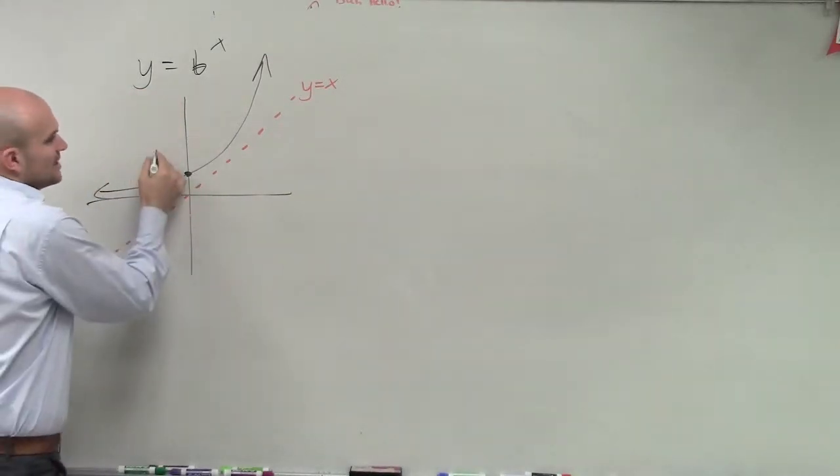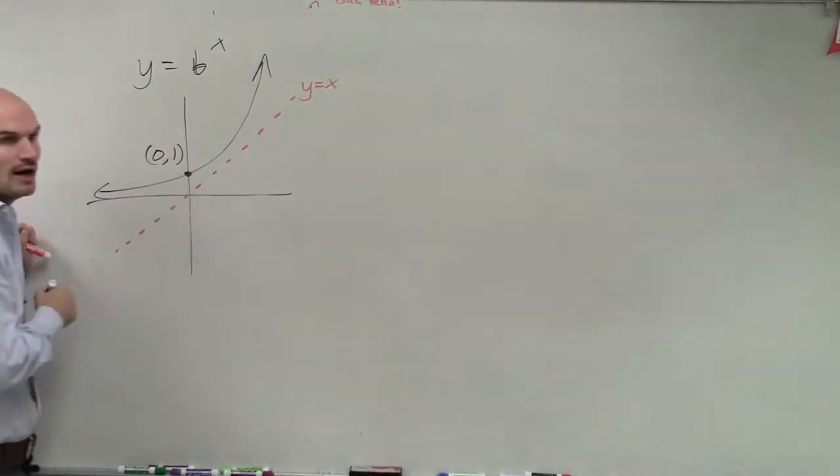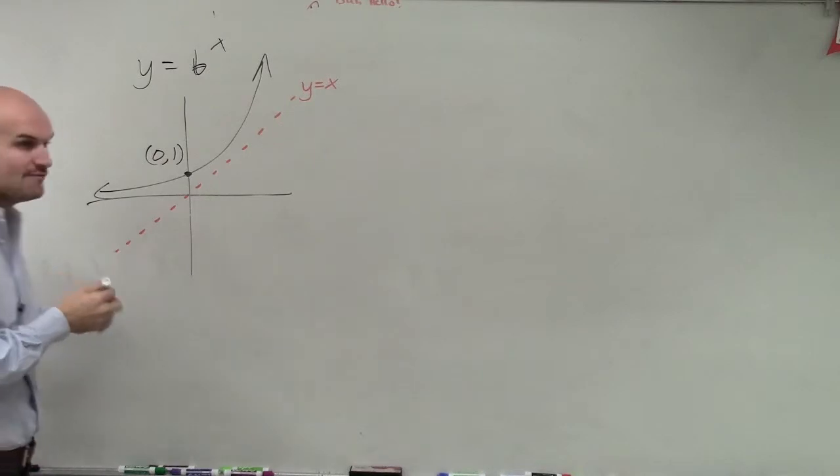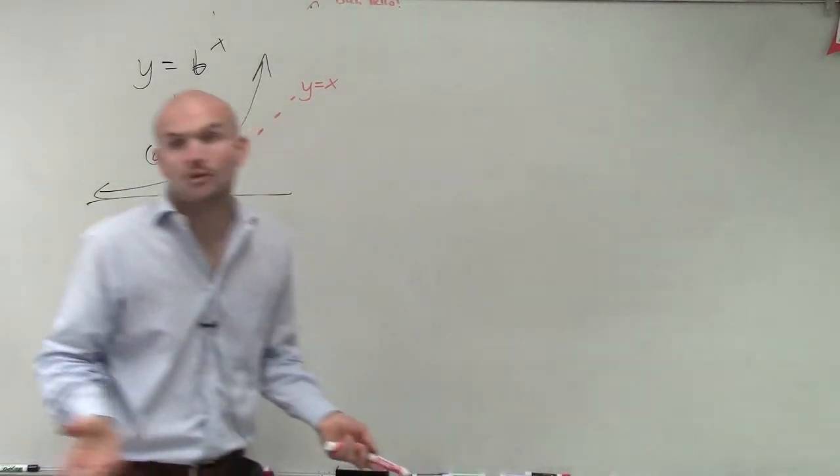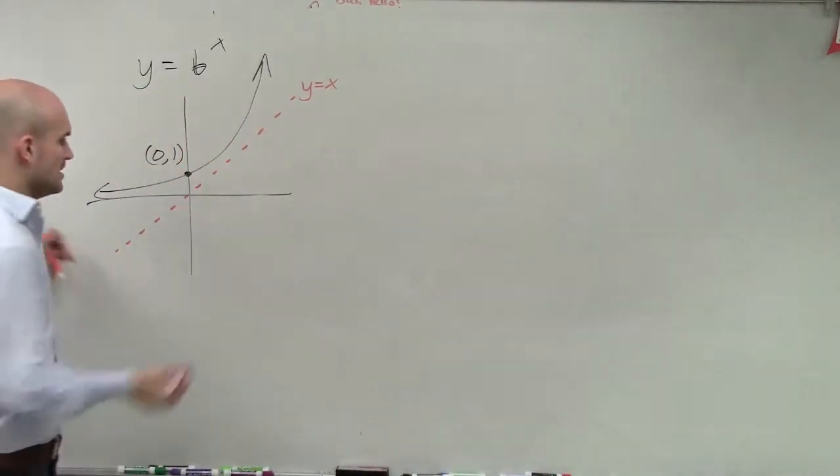So we know that this one is 0 comma 1. So when I'm looking for my inverse graph, I know that's going to be at least going to have what point? 1 comma 0.